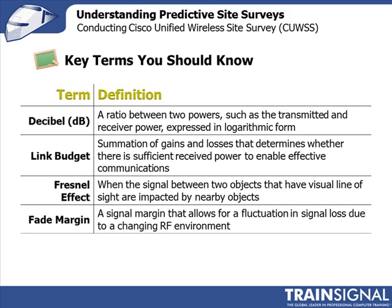A couple of terms to be familiar with: decibel — it's a ratio between two powers expressed in logarithmic form. The reason for that is the difference between transmit and receive power levels is so large you'd be talking about millions and billions of zeros. By representing it logarithmically, the number becomes more manageable — you can talk about 30, 40, or 60 dBm loss over the air. Link budget is a summation of all your gains and losses, and its main purpose is to make sure you have enough received signal strength at your receiver to recover the signal and get back to your ones and zeros.